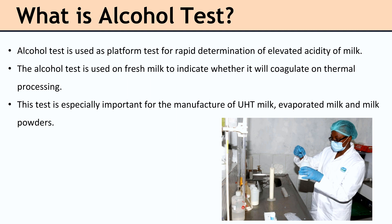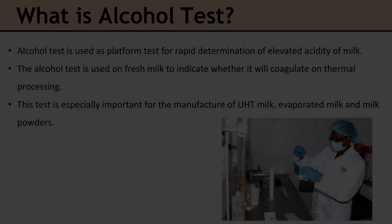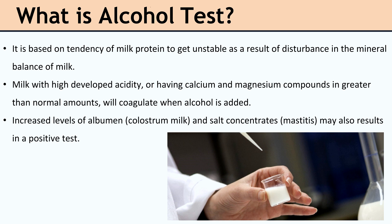The alcohol test is used as a platform test for rapid determination of elevated acidity of milk. It is used on fresh milk to indicate whether it will coagulate on thermal processing. This test is especially important for the manufacture of UHT milk, evaporated milk, and milk powders. It is based on the tendency of milk protein to become unstable as a result of disturbance in the mineral balance of milk.